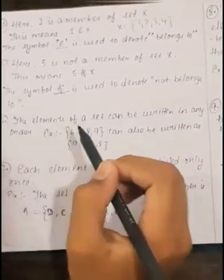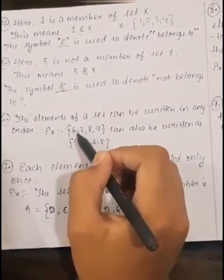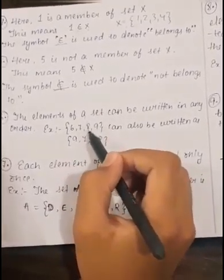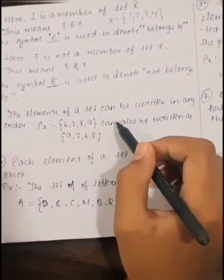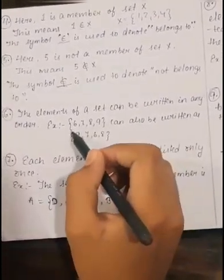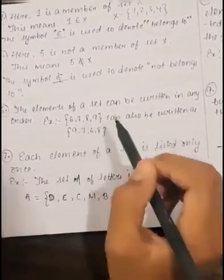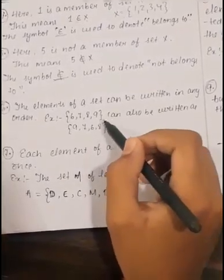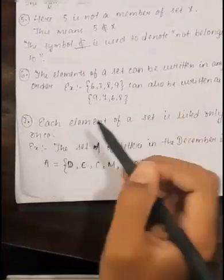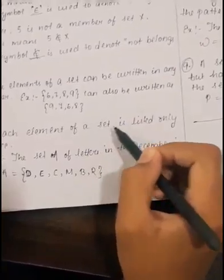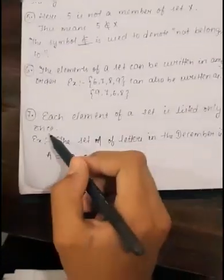The elements of a set can be written in any order. For example, {6, 7, 8, 9} can also be written as {9, 7, 6, 8}. Each element of a set is listed only once.